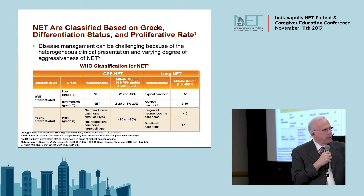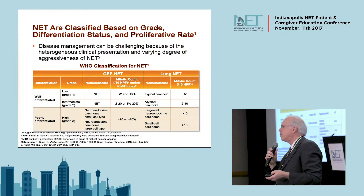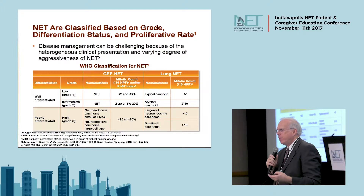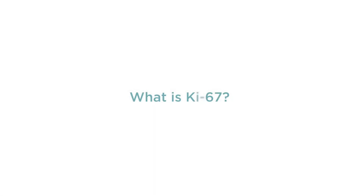As we go up in aggressiveness, when we get to 2 to 10, that's a totally different biology. We want to respect that in how we monitor the patient, surveil the patient, and how we treat that patient with medications. The other way of doing it, which is even more accurate, is to apply a chemical test to the cells called Ki-67.